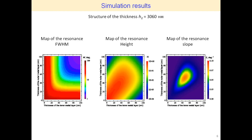Consider the structure with a quartz layer thickness of 3060 nm and perform estimation of the width, height, and slope of the resonance line shapes based on analytically obtained expressions as functions of the thicknesses of the inner and outer metal layers. The thicknesses of the silver layers varied from 1 to 100 nm with a step of 1 nm. The distribution of resonance width is shown in the left figure. The maximum values of widths are achieved for minimum thicknesses, and a simultaneous increase in the thicknesses of both metal layers causes an exponential decrease in the widths.